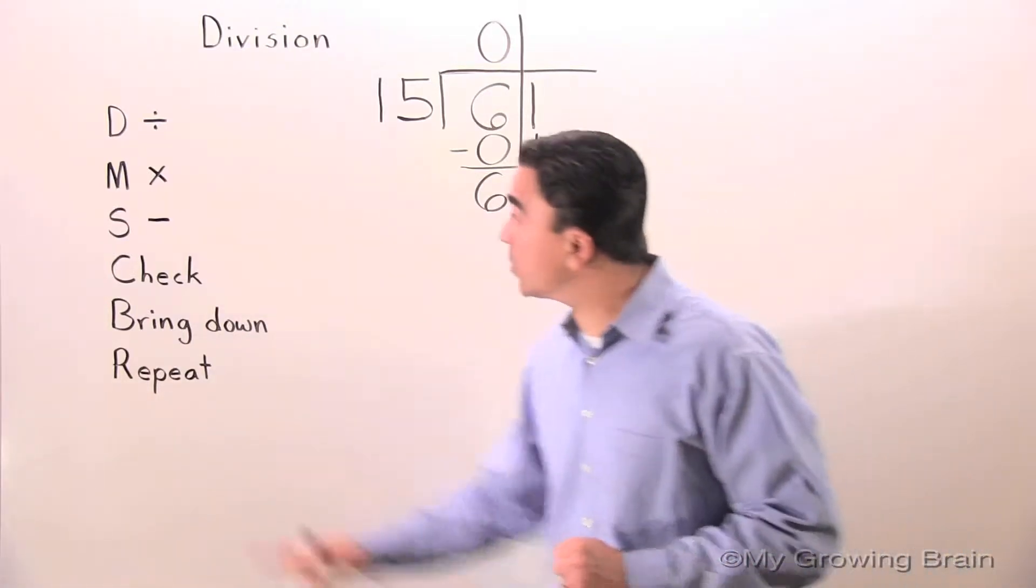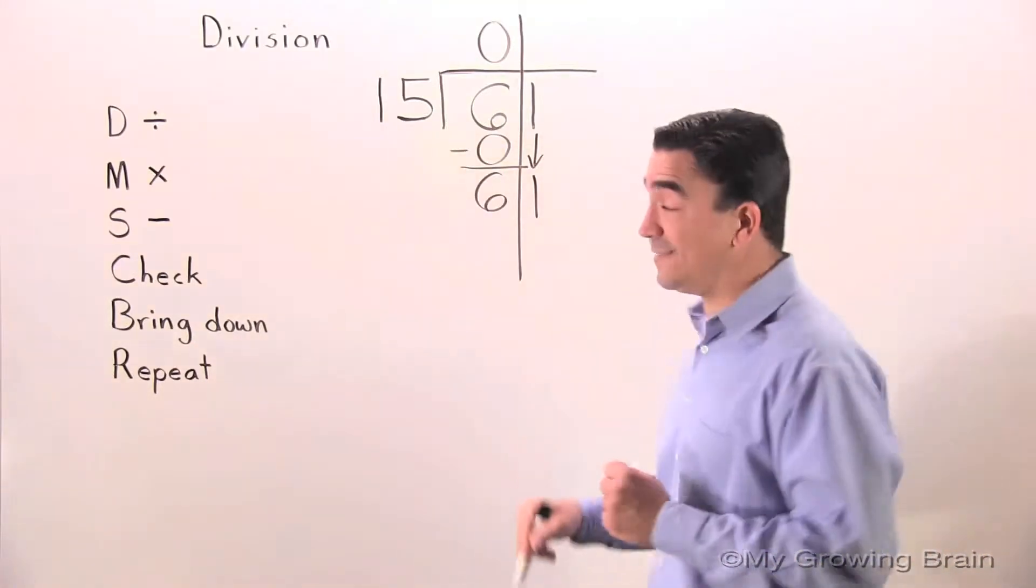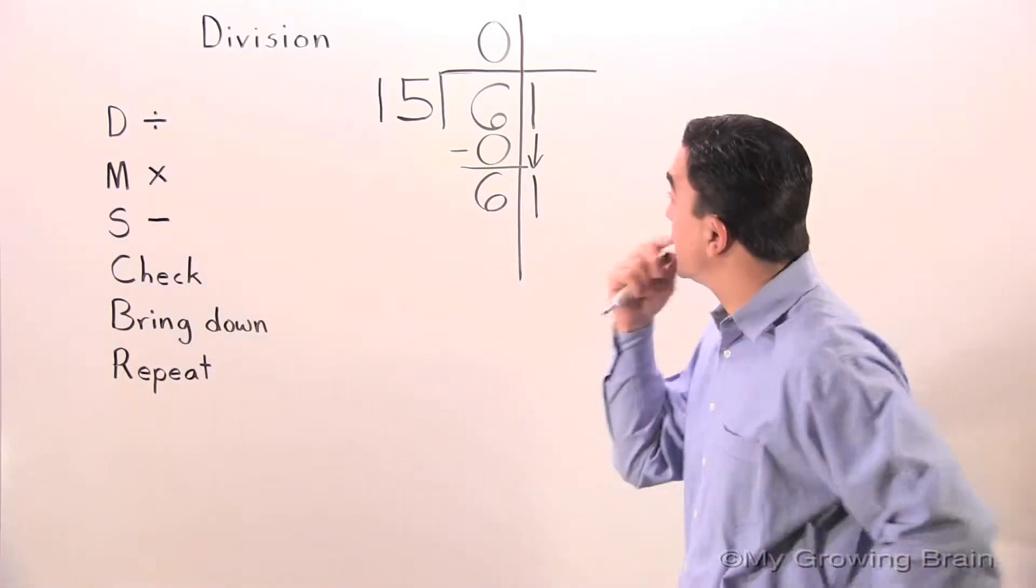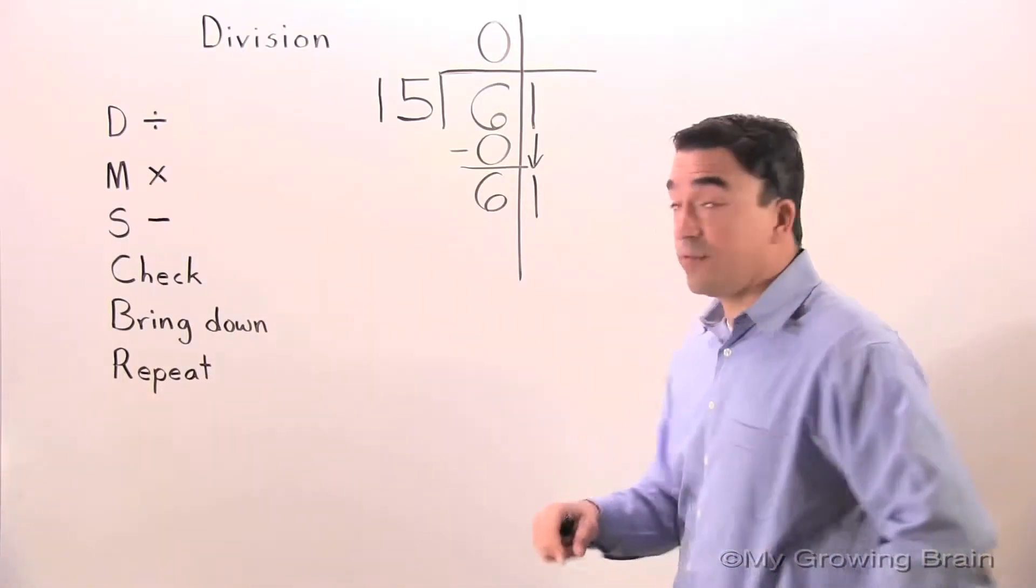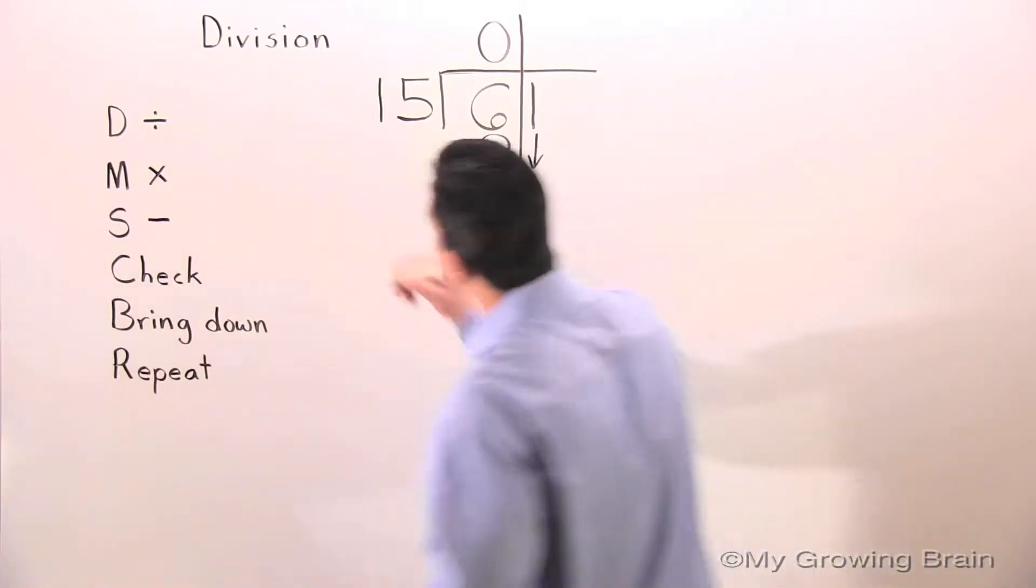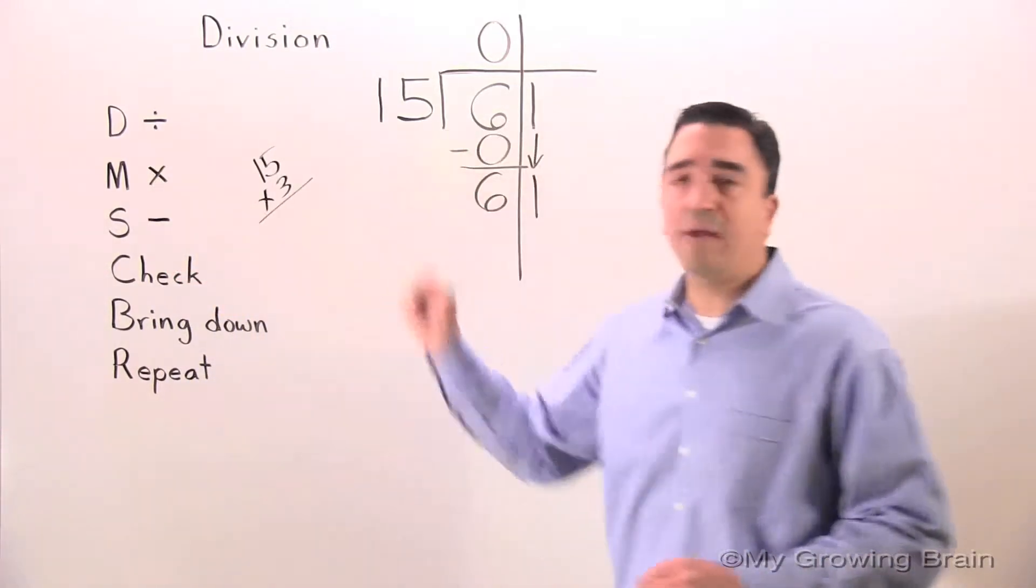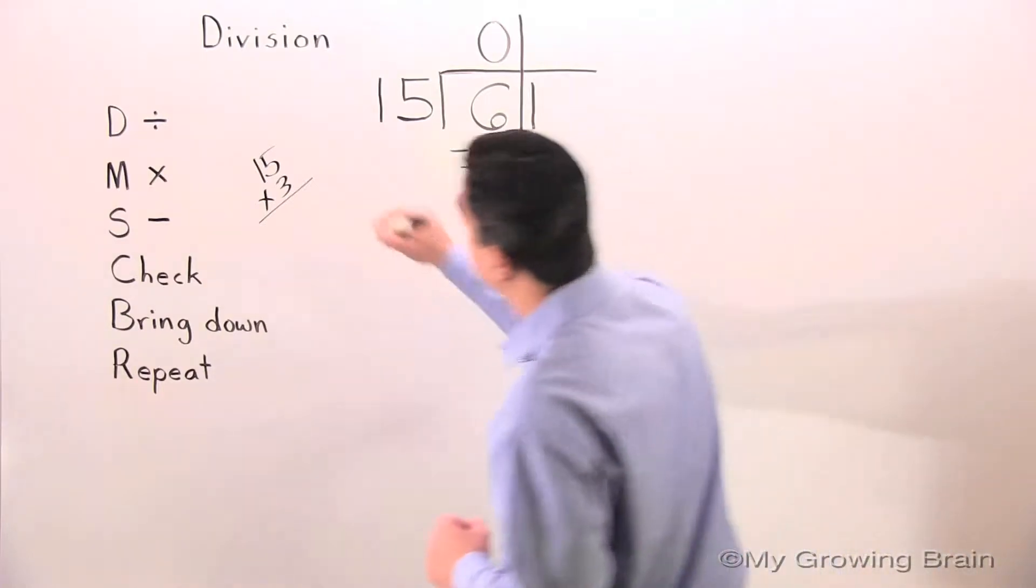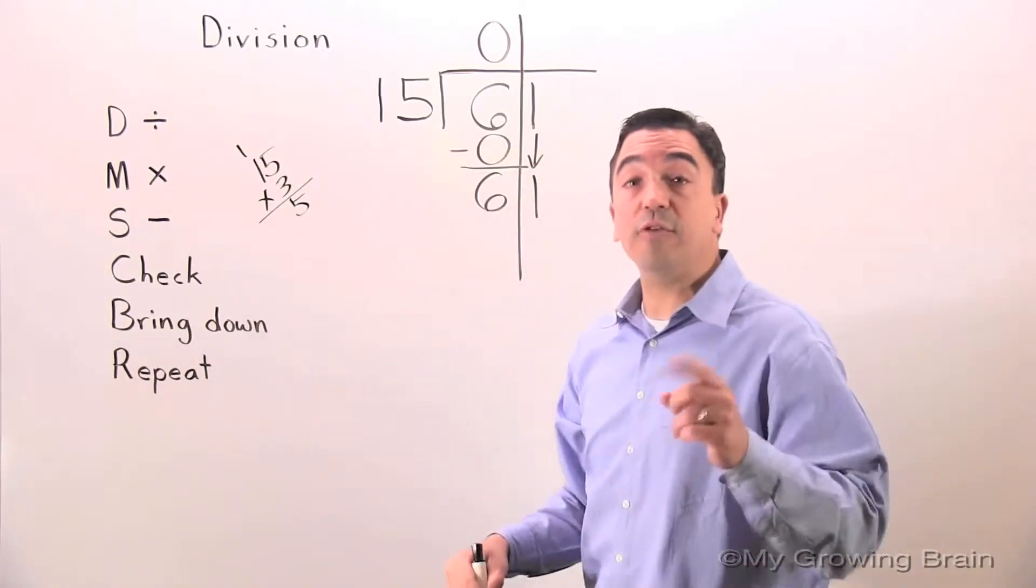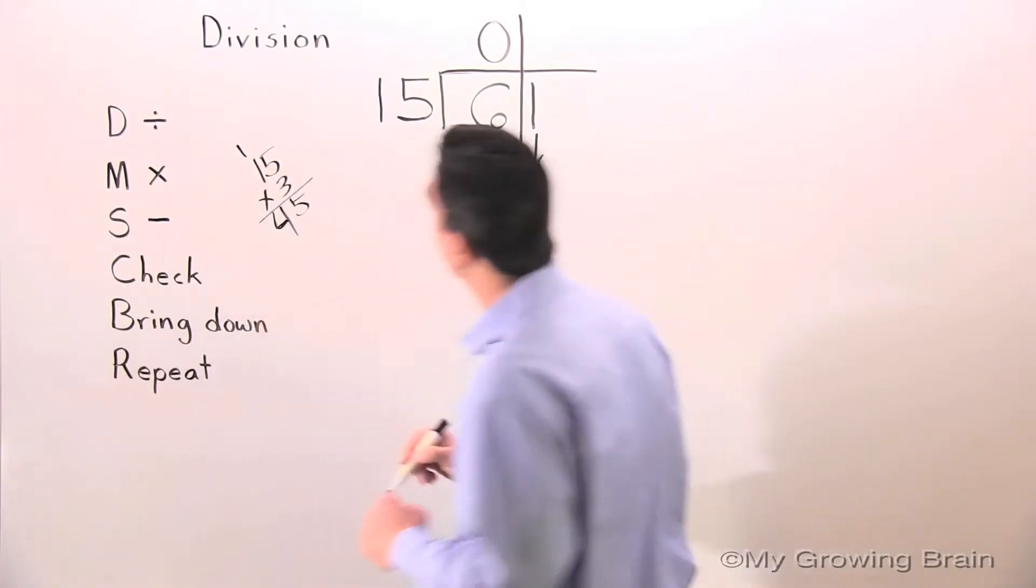Next step, repeat the process all the way back to the top. 61 divided by 15, or 15 into 61. We're going to have to experiment a little here. 15 times 2 is 30. What is 15 times 3? 3 times 5 is 15, regroup the 1. 3 times 1 is 3, plus 1 is 4. 45.